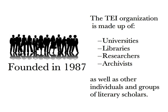The organization TEI was founded in 1987 in response to a huge proliferation of coding systems. Scholars wanted to set a standard coding system for digital humanities projects to make work in this area more consistent and less confusing. So universities, libraries, and other groups interested in the digital humanities came together to create the Text Encoding Initiative. The organization still exists today, often referred to as the TEI Consortium.